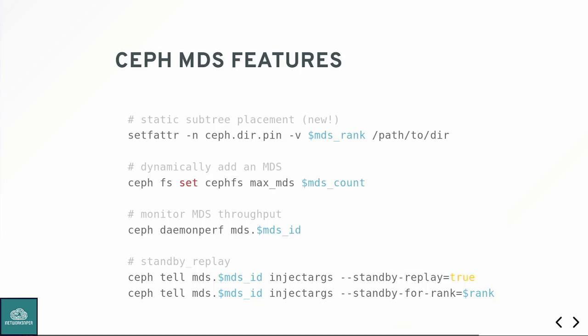If you crash an MDS, the state has to be reconstructed from the state of clients — it's recovery. We also have performance counters so you can determine which of your MDSs might be hot and which directories are really hot. You can have a metadata server stand by and watch the behavior of another MDS, ready to jump in immediately. The standby MDS follows the log of the active MDS and reconstructs its state live. In the event of the active MDS failure, recovery isn't required because the standby MDS already stores that state.